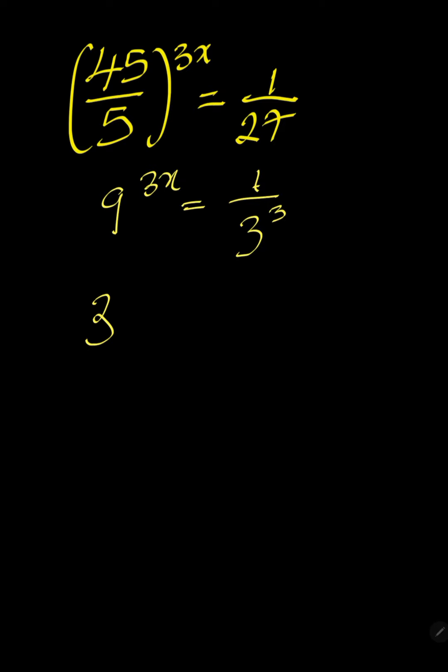Then 9 can be split as 3 to the power of 2, because 3 power 2 is 9. Then everything power 3x equals 1 over 3 power 3, is the same thing as 3 power minus 3.